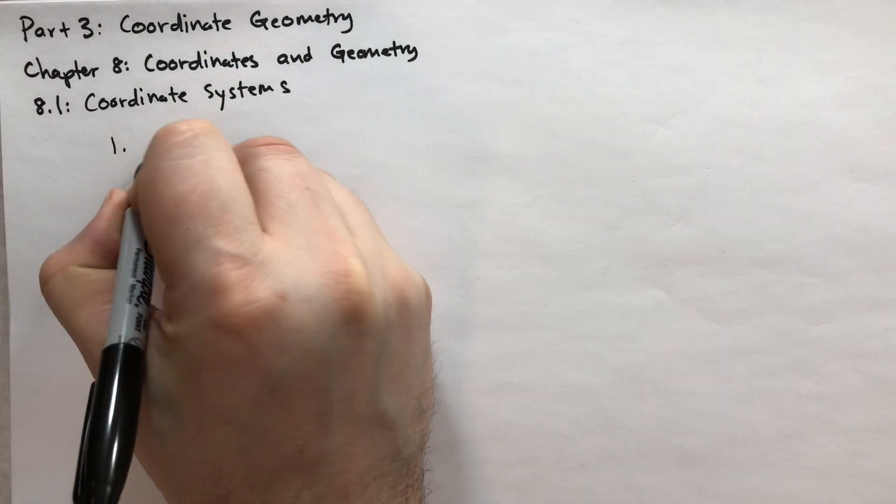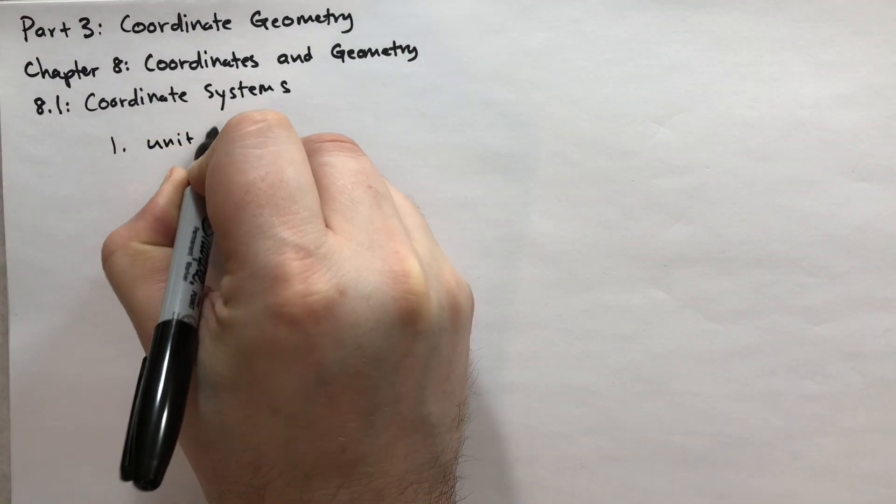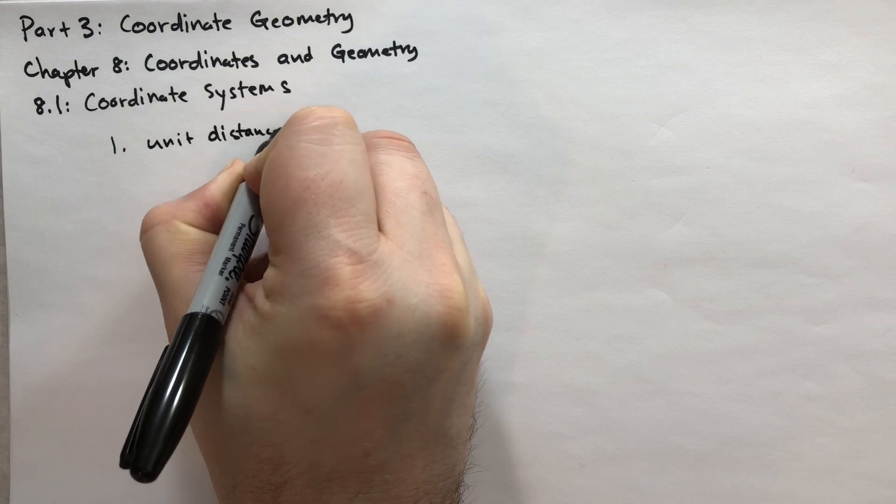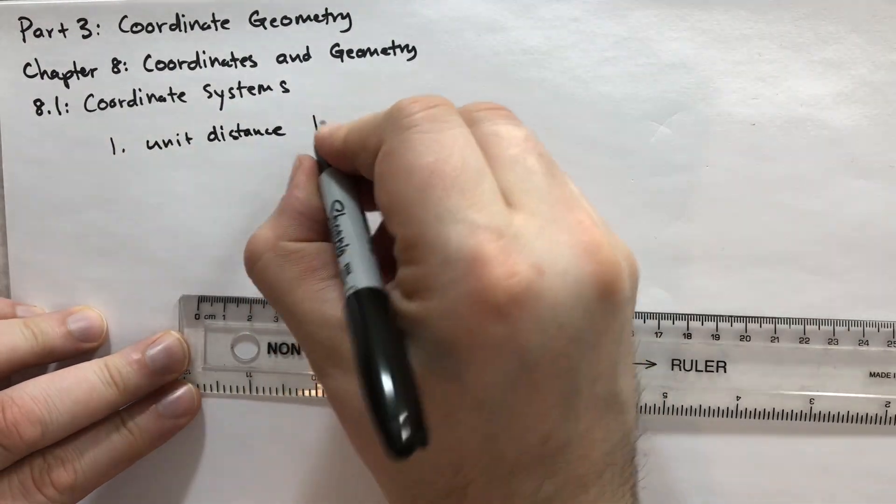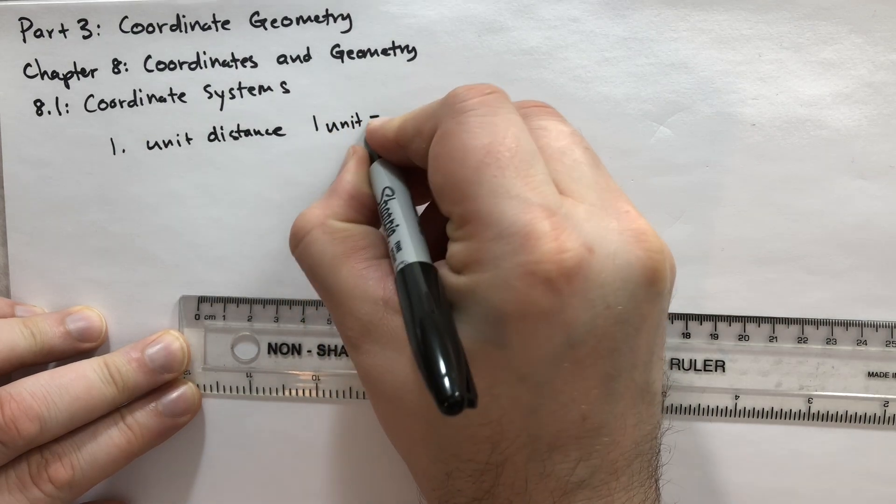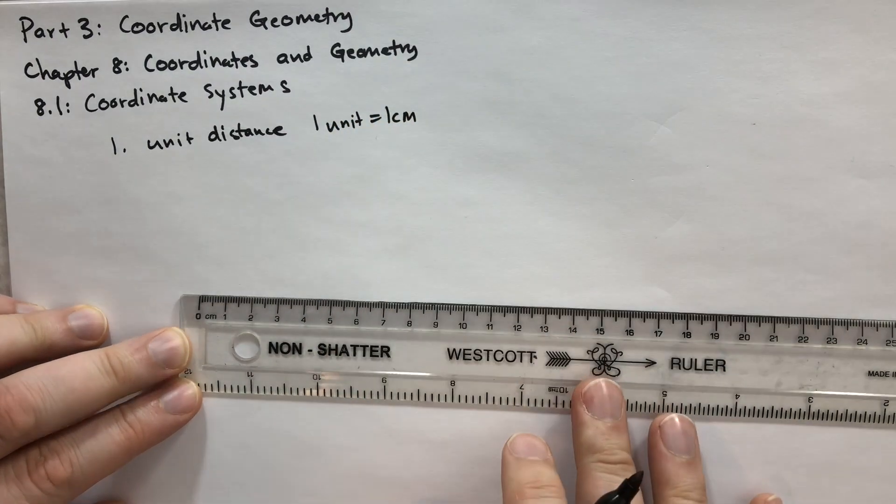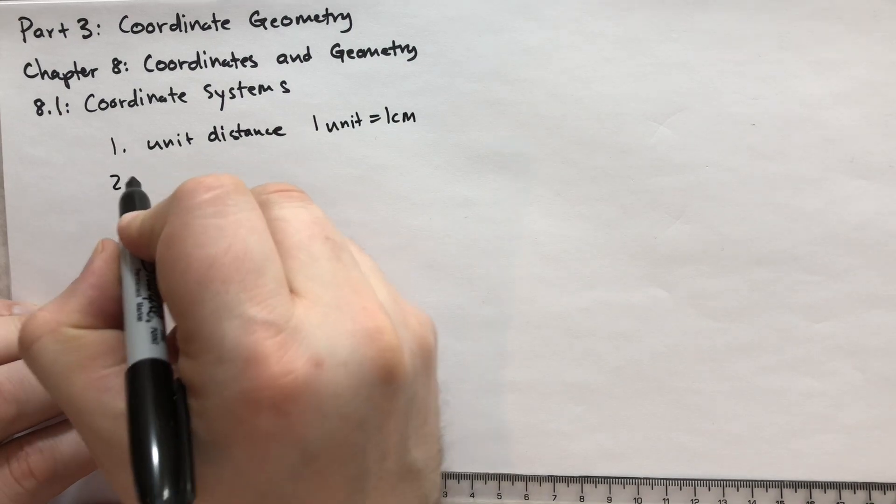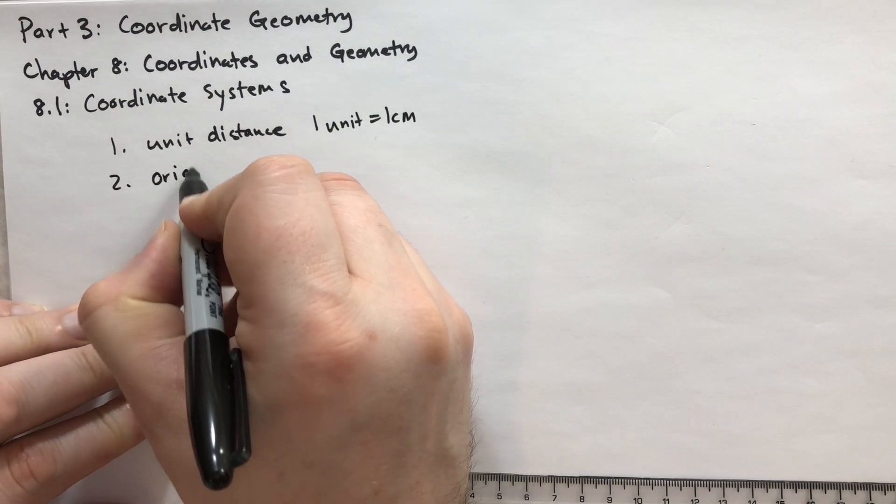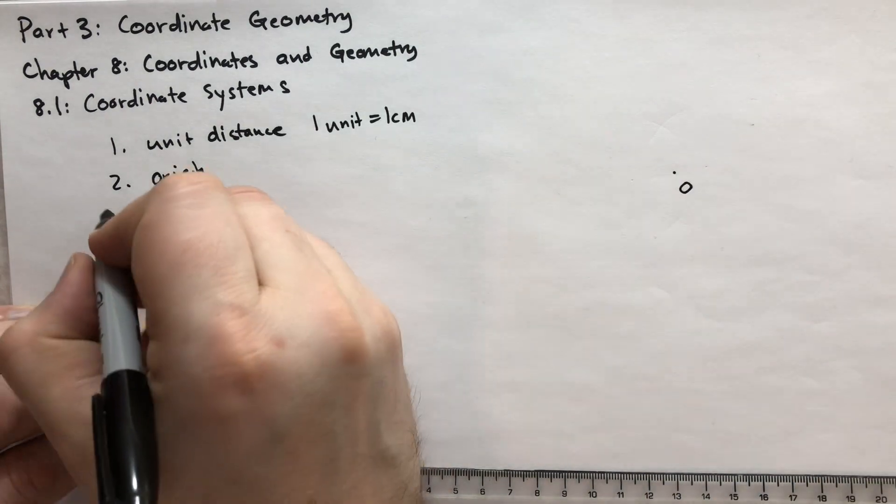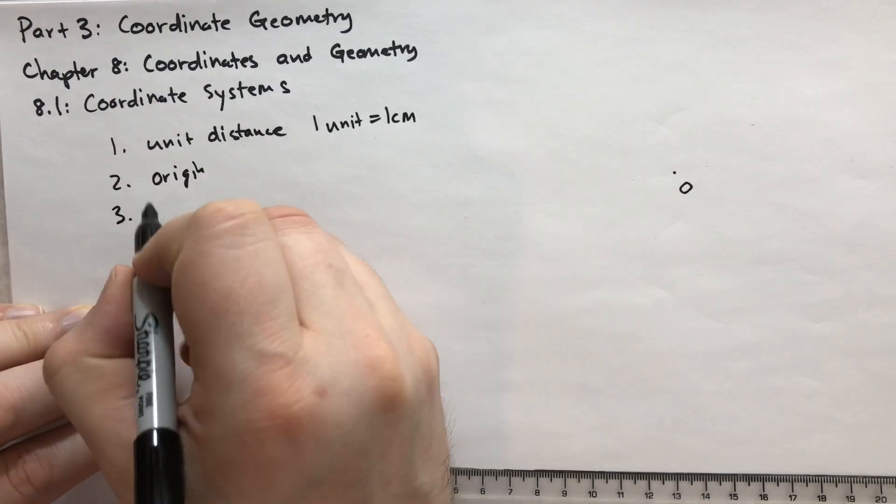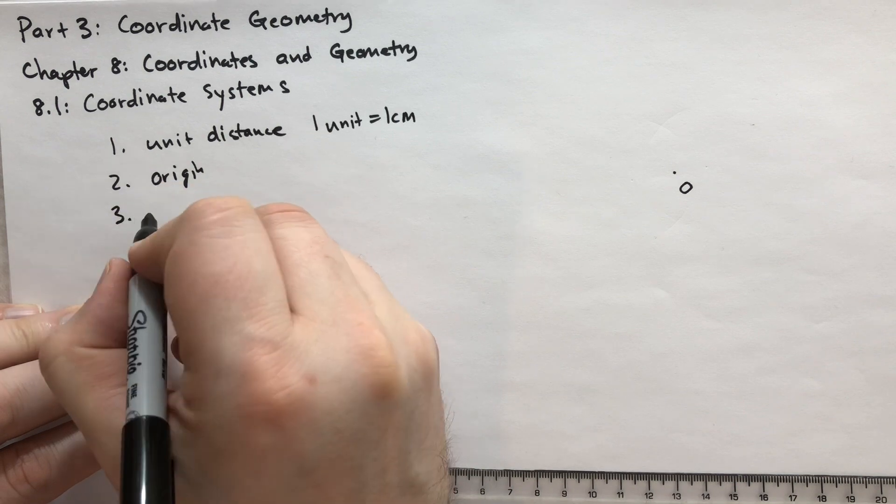The first thing we need is we need a unit distance. And I have a ruler here and I've chosen that the unit distance, one unit, is going to be one centimeter. The next thing we're going to need is we're going to need an origin. This is just some point O. So I'm going to choose this point here. I'm going to call that O the origin. And the last thing we need is we need two coordinate axes.